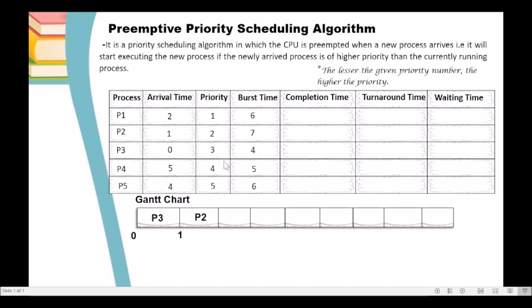The burst time of P3 is 4; it executed for 1 unit of time, so its remaining burst time is now 3 — meaning it still needs 3 units of time to complete its execution. P2 will execute until the next arrival time, which is 2. So P2 will execute until time 2.